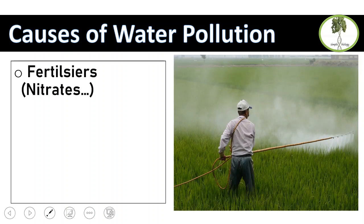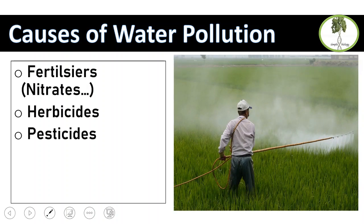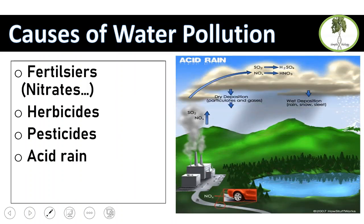What are the causes of water pollution? Fertilizers, herbicides, and pesticides — excess use of fertilizers may leach into nearby rivers and cause eutrophication. Herbicides and pesticides also might pollute water. Acid rain: nitrogen oxides and sulfur oxides from car exhaust and factories rise into the atmosphere, react with water, and become nitric acid and sulfuric acid. When it rains, they precipitate.